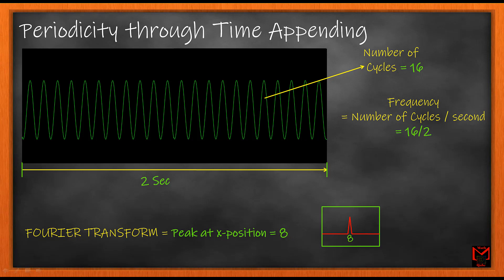Next we have time appending where we just replicate the signal over time. Meaning, as shown here, we have 16 cycles but it is extending over 2 seconds. So the frequency will be 16 over 2 which will be equal to 8. So here the Fourier transform will have its peak at 8.